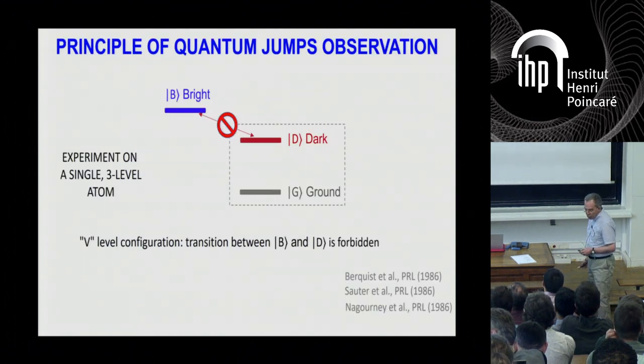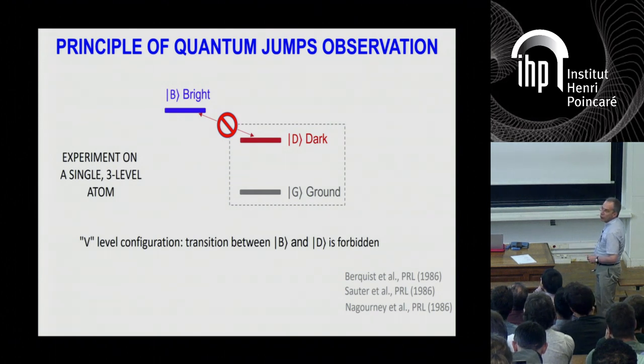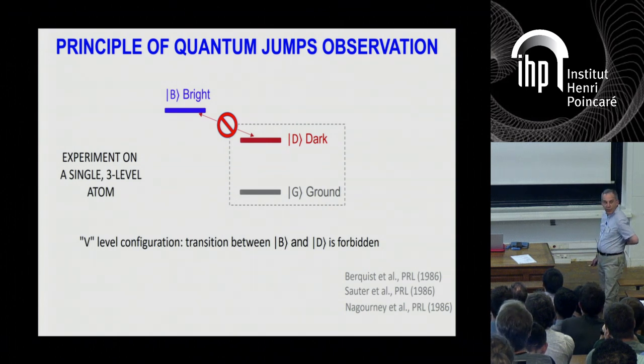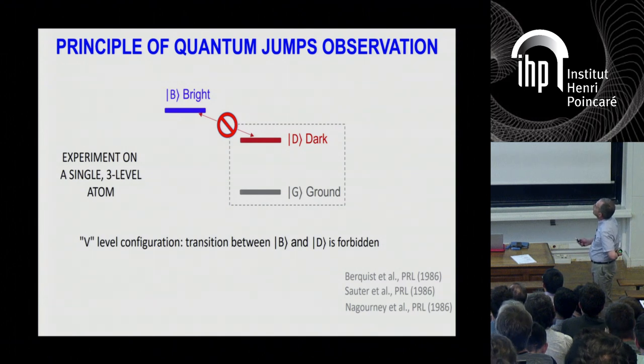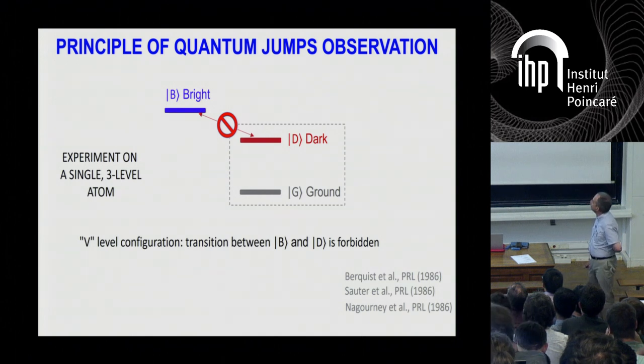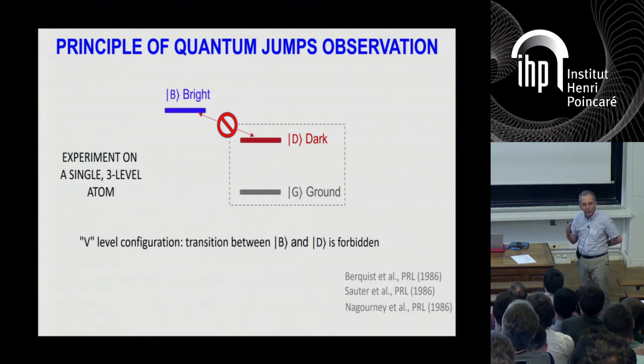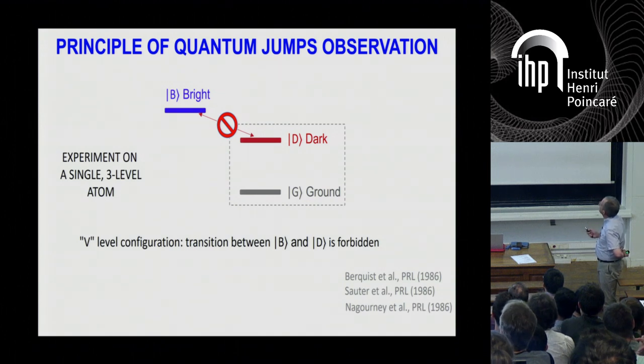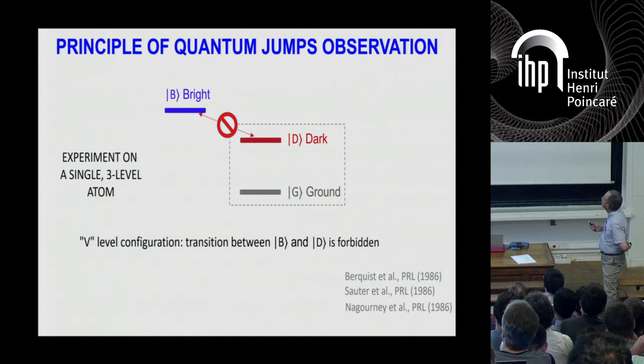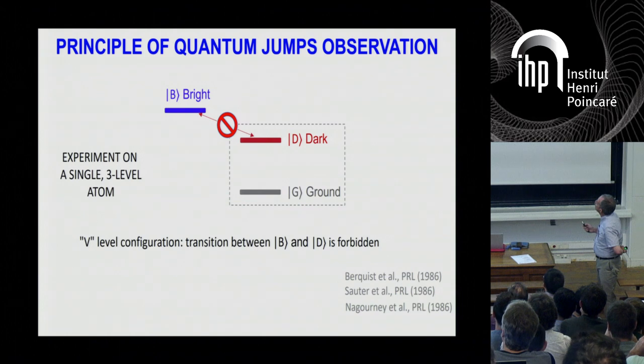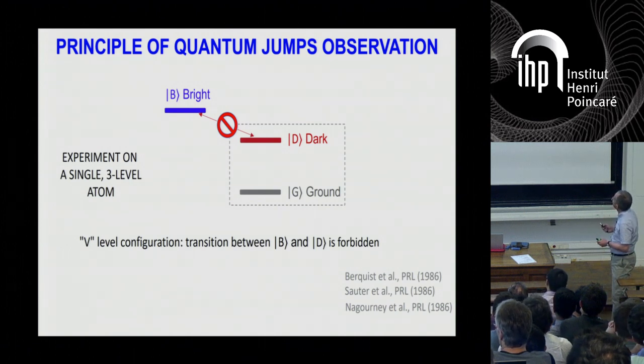So let me remind you, or explain for the more junior members of the audience, the principle of the original observation of quantum jumps, which was a key experiment done on a single atom. The idea is to monitor whether you are in the ground or dark state of an atom. This excited state is called dark because it's not coupled or very weakly coupled to the radiation field. And this three-level atom has what is called the V-level configuration because this transition here from D to this state, the ancilla state bright, is strongly forbidden. This bright state serves as an ancilla state for the readout of this two-level manifold.